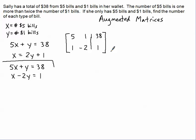This is an augmented matrix, and you can see that the top three numbers simply come from the top equation, 5, 1, and 38. Here they are, 5, 1, and 38. And the bottom three numbers, 1, negative 2, and 1, come from the bottom equation. Matrices allows us to work really only with the coefficients.